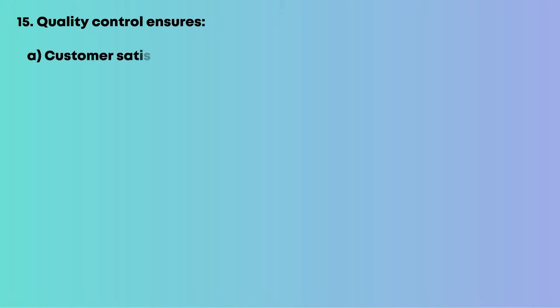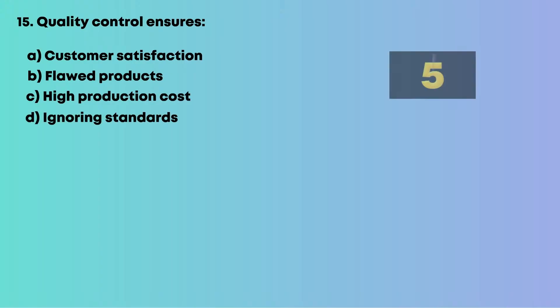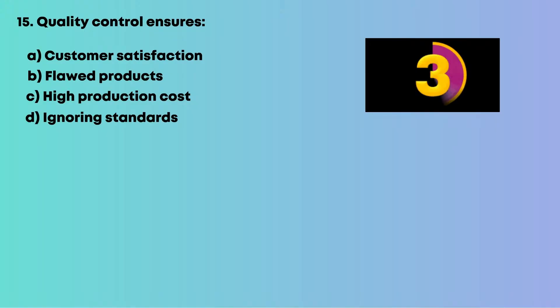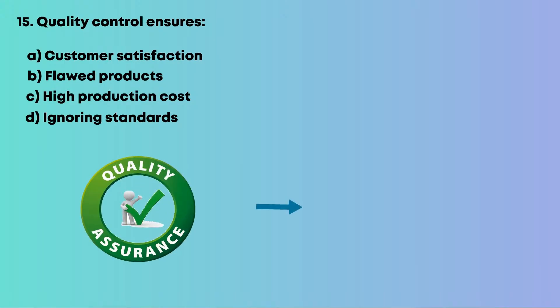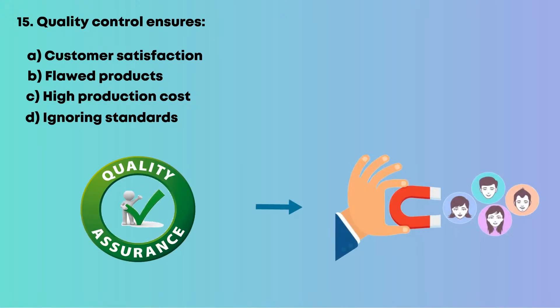Question 15: Quality control ensures: A, customer satisfaction; B, flawed products; C, high production cost; D, ignoring standards. Consistent quality retains customers. So the answer is A, customer satisfaction.